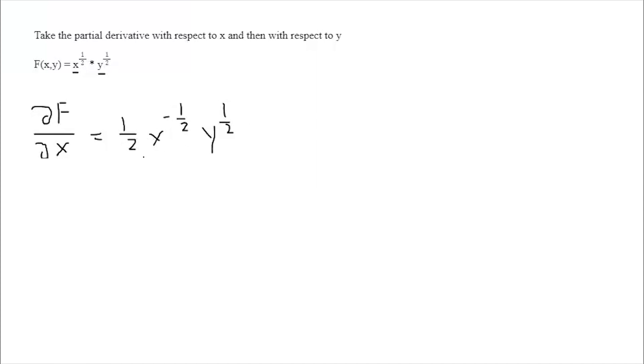If we would like, we can simplify this given that there's a negative exponent in our equation. To do so, we can make this y to the 1 half over 2 x to the 1 half. That would be our final answer for the partial derivative of function f with respect to x.